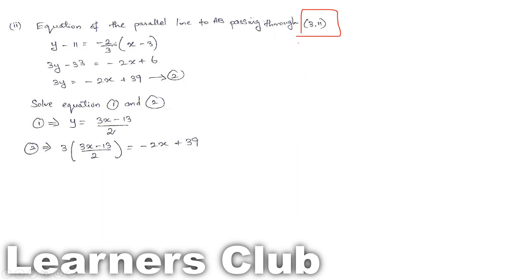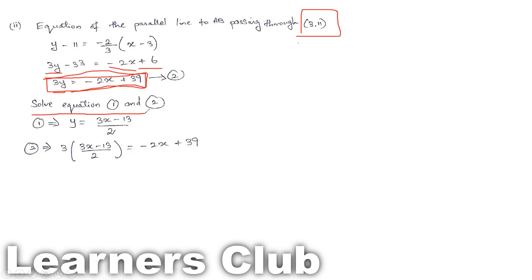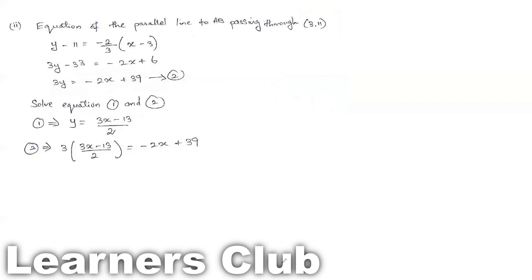Using y minus 11 equals minus 2 by 3 times (x minus 3) and simplifying: 3y minus 33 equals minus 2x plus 6, so 3y equals minus 2x plus 39. This is equation 2. Since point C lies on both the perpendicular bisector (equation 1) and the parallel line (equation 2), the point of intersection of these two equations gives the coordinates of C.